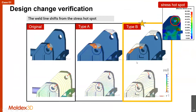Later, they verify the results. First, they look at the location of the weld line. As you can see, Type A on the left is the original location of the weld line. In the Type A modification, the location of the weld line is slightly shifted from the original location. And for Type B, the location of the weld line moves a little bit further than Type A.